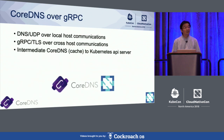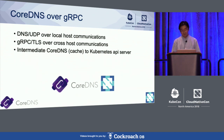We currently use CoreDNS over gRPC to address some of these issues. The idea is to use the same DNS over UDP for localhost communication. For localhost, packet loss rarely happens. For cross-host communications, however, we use gRPC, which is much more reliable and much more secure.